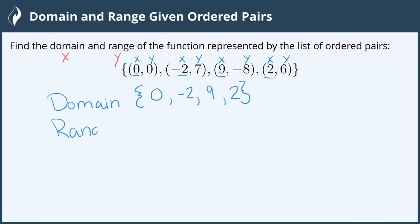The range is the second value for all of the ordered pairs again listing as a set with curly braces. The second values are {0, 7, -8, 6} or all of the y values.